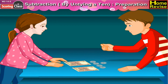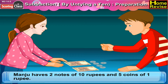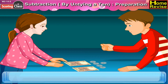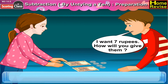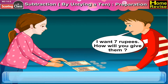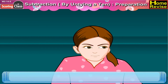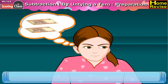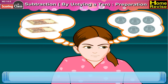Manju and Sanju are two friends. Manju had two notes of ten rupees and five coins of one rupee. Sanju asked Manju, I want seven rupees. How will you give them? Manju got confused, because she had two notes of ten rupees and five coins of one rupee — she did not have seven coins of one rupee.